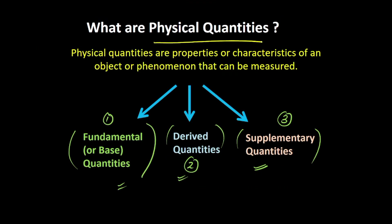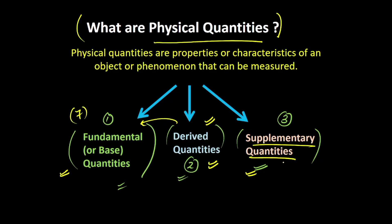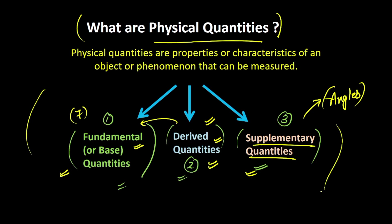As a recap: physical quantities are all the quantities that could be measured, and there are three types. The fundamental or base quantities — we have seven such quantities that are independent of each other. Derived quantities are all other physical quantities derived with the help of these fundamental ones. And supplementary physical quantities are the exception — angles that are neither fundamental nor derived. I hope you understand about physical quantities, their types, and the basics of dimensional formula. See you in the next video. Bye-bye.